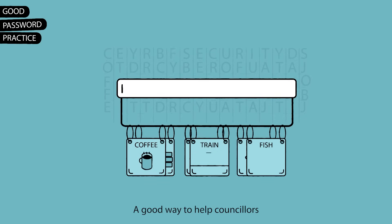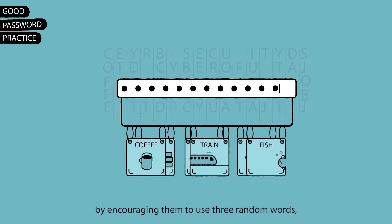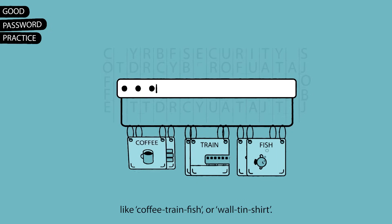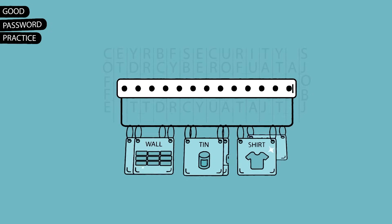A good way to help staff manage the complexity requirement is by encouraging them to use three random words, like coffee, train, fish or wool, tin, shirt.